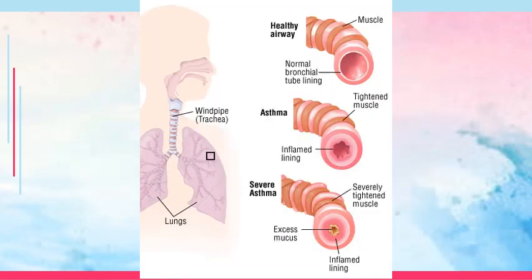As you can see on this slide, the upper portion shows a healthy airway with normal bronchial tube lining. In asthma, you can see inflammation of the lining, edema, and deposits of fluids or mucus. In severe asthma, there is already excess mucus, an inflamed lung, and severely tightened muscle. That's why if your patient with asthma manifests wheezing and then the wheezing suddenly disappears, you would suspect the patient is progressing towards severe asthma.